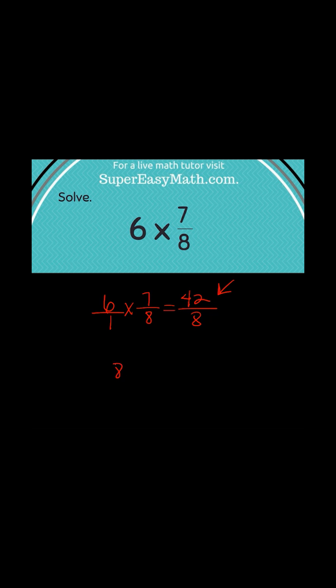Okay, so the way we fix that is by dividing the eight into 42, and we're going to get five. That was 40, subtract, you get your two. So when you divide your eight into 42, you get five and two eighths.